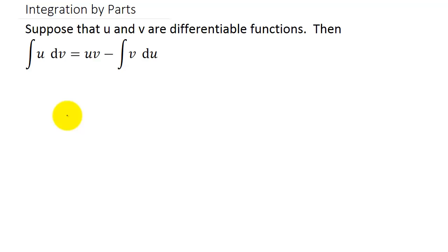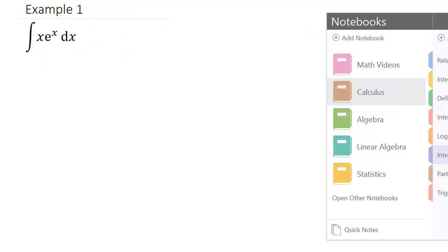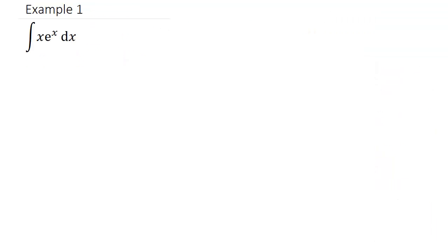That's one way to start: how do you know what to let u equal and what to let dv equal? So let's take a look at an example. Here we have x times e to the x dx.